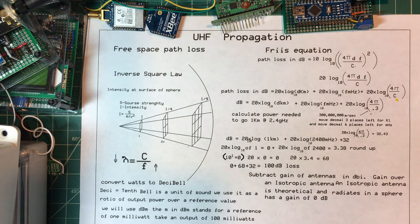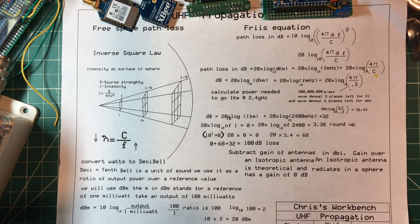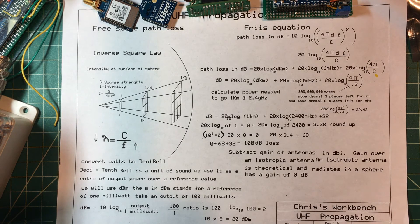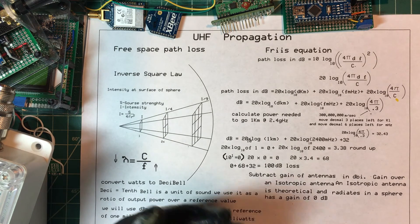Let's go out to two kilometers — double the distance. Log base 10 of 2 is 0.3, and 0.3 times 20 is 6, so our RSSI will be minus 86 dBm — only 4 dB over the noise. That won't be very good. We could go up to one watt — 30 dBm — gaining 10 dB, which puts us 14 dB over the noise. That's pretty good, but I don't have a one-watt radio here.